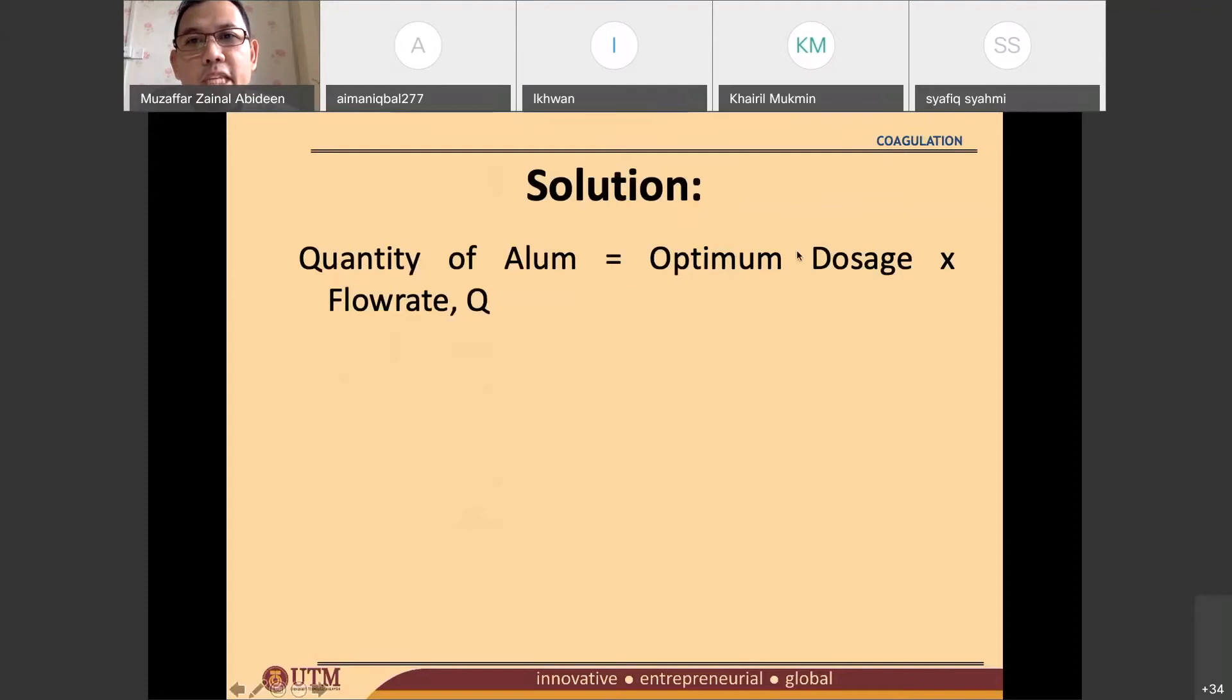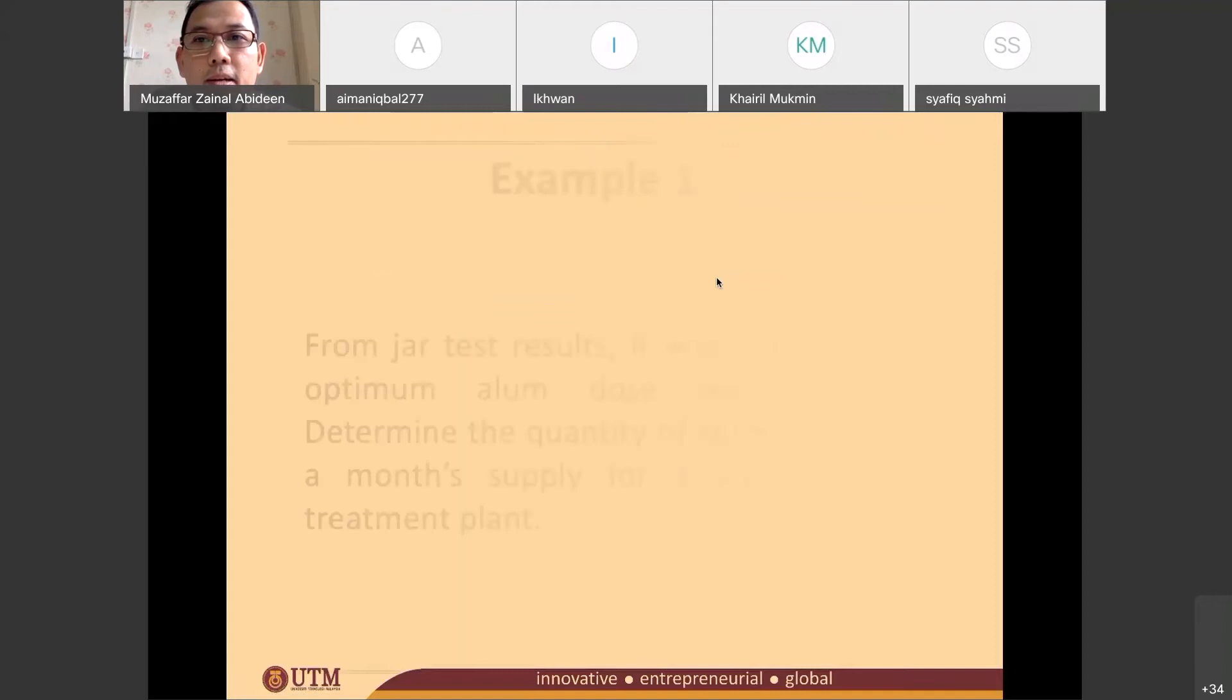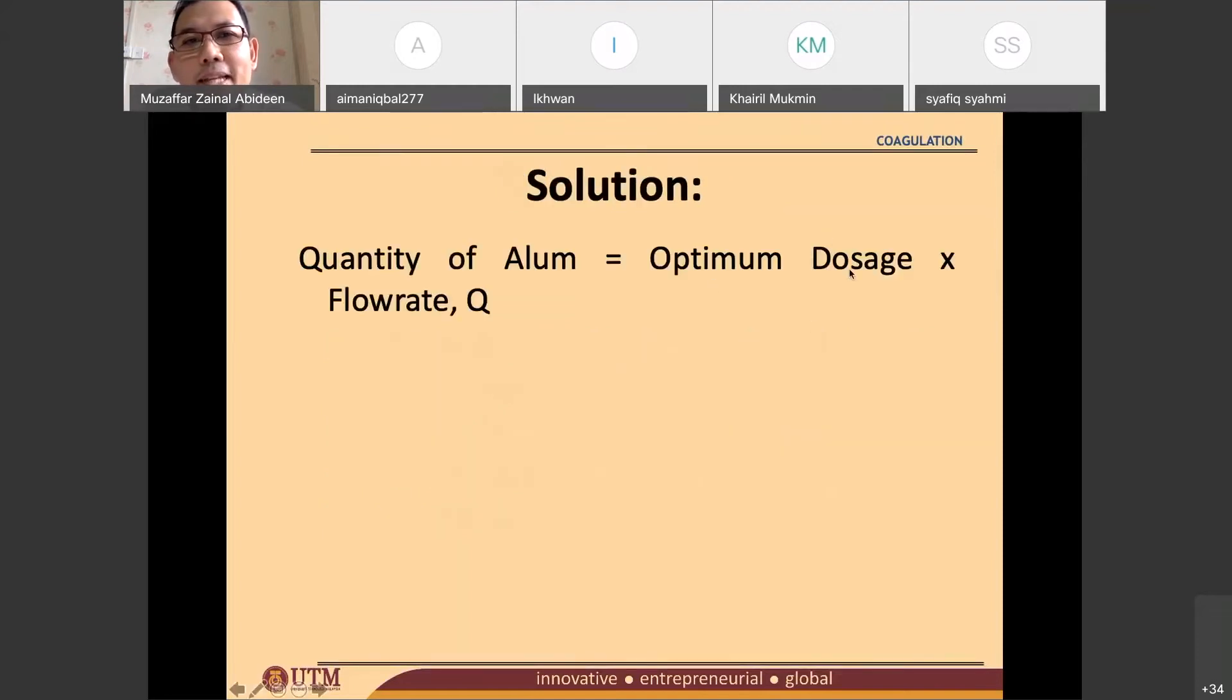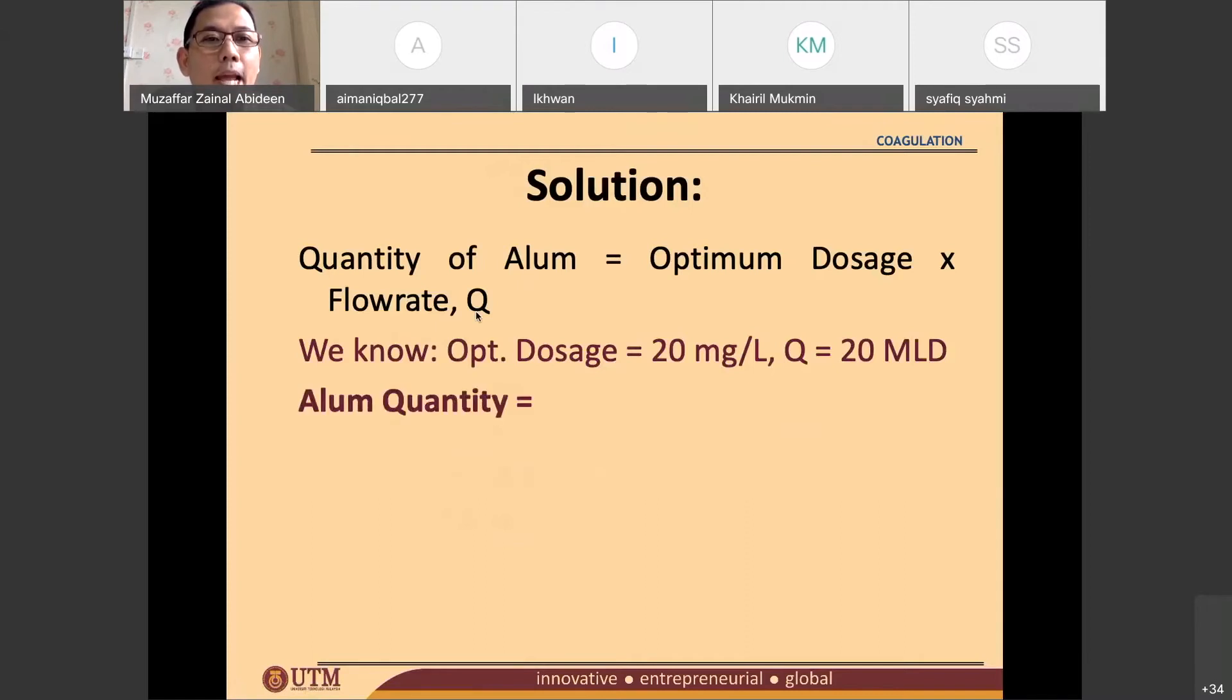So we look at the optimum dosage. It's being told already, right? So the optimum dosage was 20 mg per liter and the flowrate is 20 MLD. Therefore, we know that. And then the alum quantity is this value multiplied by that value. 20 mg per liter times with the flowrate, 20 MLD means 20 million liters per day.